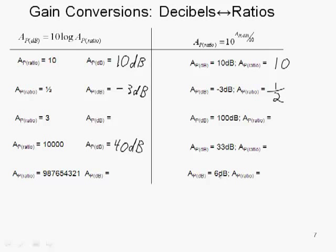I'm going to skip down to the bottom one and let you do these two middle ones. We want to figure out the ratio gain when our gain is 6 dB. If we have 6 dB, we plug 6 into this equation: 6 over 10 is 0.6, 10 to the 0.6 equals about 4. So a gain of 4 is the same as having a gain of 6 dB. They mean the same thing, they're just different ways of expressing that gain.